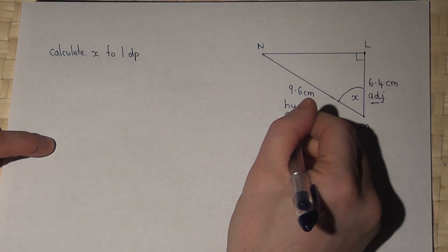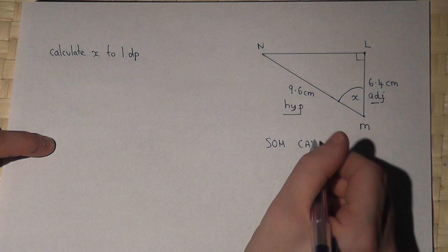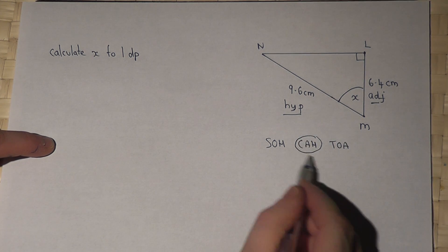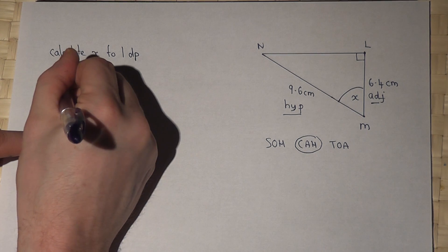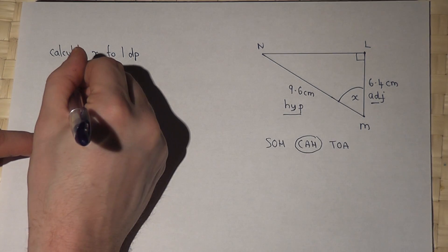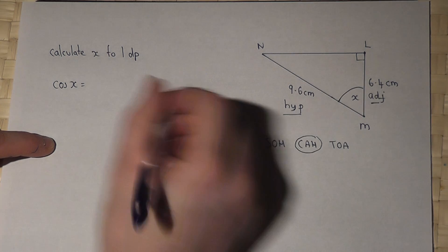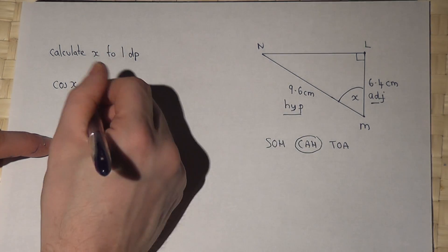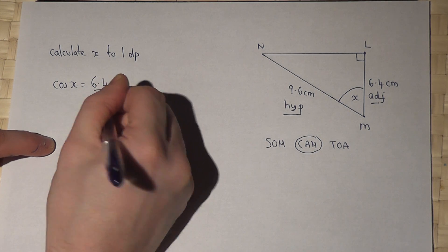Now I've got the adjacent and the hypotenuse and A and H occur here, and this equation tells us that cos of the angle which is X is equal to the adjacent which is 6.4 all over the hypotenuse which is 9.6.